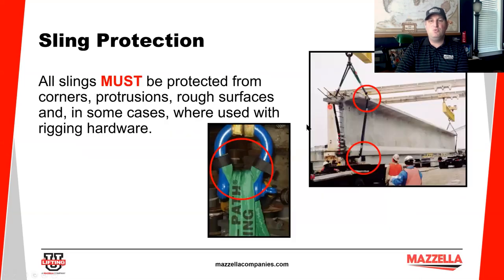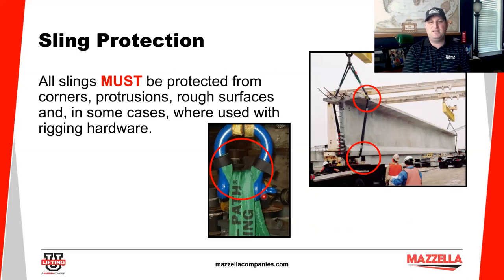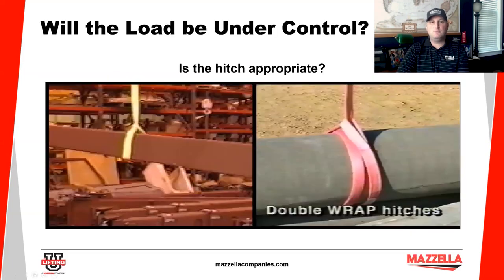Cutting from sharp edges is preventable when you use the correct type of sling protection. Here we've got twin-path slings being used in a bridge girder set. At the very top, wherever the sling comes in contact with the load and the load-bearing area, we must have sling protection. This also applies when using hardware, because there could be protrusions or rough surfaces. If you've used hardware with a chain or wire rope sling and created a burr, then switch to a synthetic sling like twin-path, you must have protection on that item.